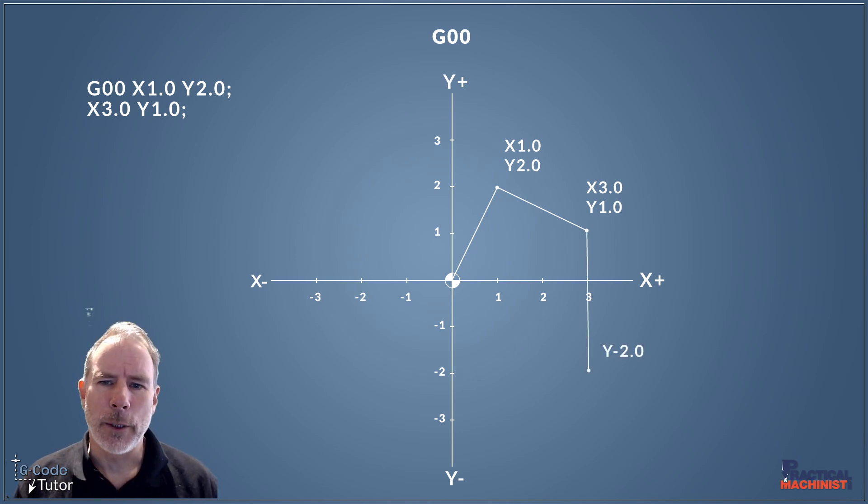Okay, so our next point is we're coming down two units in Y. So there's actually three units difference between our start position and our end position of Y there. But all our dimensions are stemming from our zero position, our datum position, because we are using absolute. So we're coming to a position of Y minus two, even though it's a three units move. And we would write that just as Y minus two. We don't need to give an X dimension if we're not moving the axes in X.